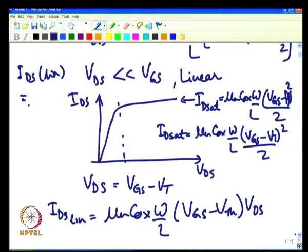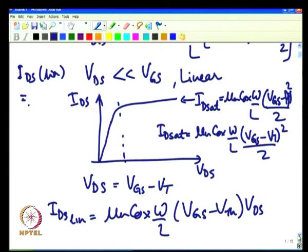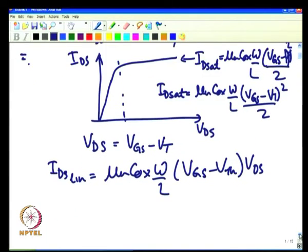Whether you look at the linear or saturation region current, there is an important parameter: the threshold voltage. This indicates that if we do an IV characterization in either region, we should be able to extract the threshold voltage.